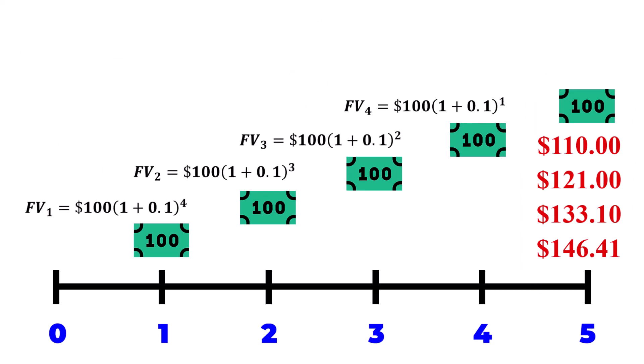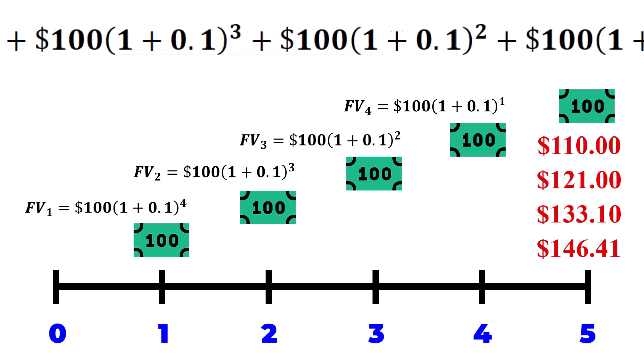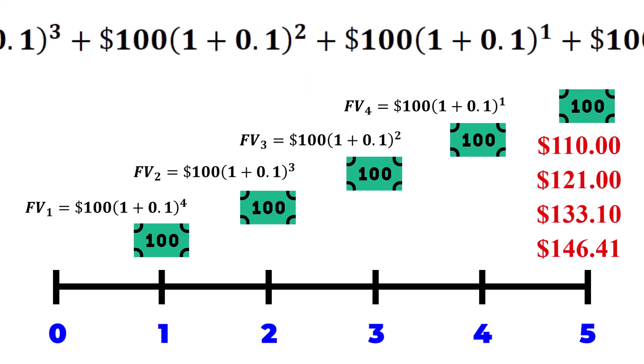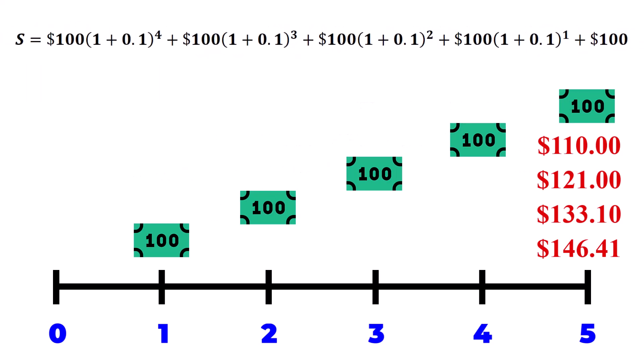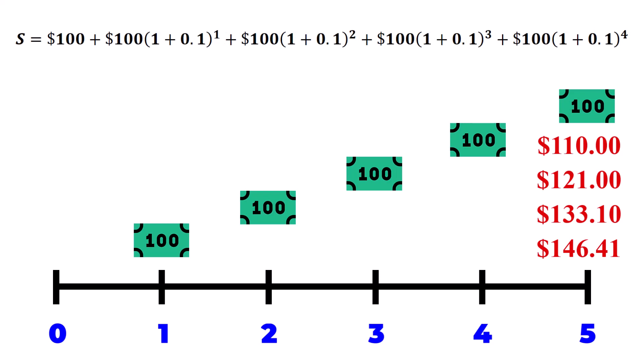To derive this formula, let's write each FV expression as a sum represented by S. The equation is S equals FV1 plus FV2 plus FV3 plus FV4 plus 100. For the sake of simplicity of what I'm about to reveal to you, we will reverse the order of these terms. And note, by doing this, I'm not changing the sum.